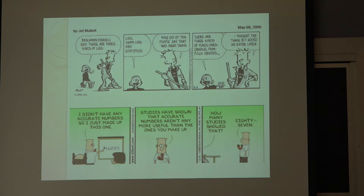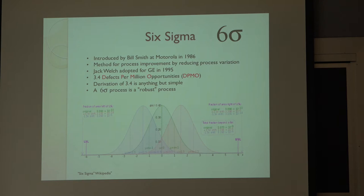Any questions on statistical process control? There's another term which is actually part of statistical process control called Six Sigma. Six Sigma was invented by a guy, Bill Smith, at Motorola in 1986. It's a method for process improvement by reducing process variation. Remember, Montgomery says quality is the inverse of variability.